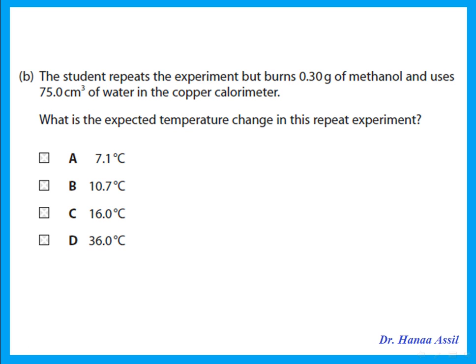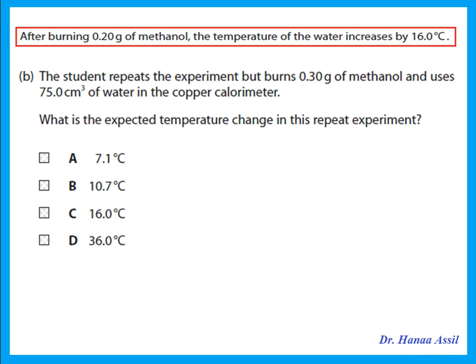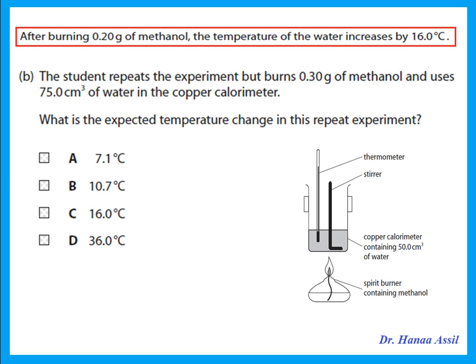The student repeats the experiment but burns 0.3 grams of methanol and uses 75 cm³ of water, instead of the original 0.2 grams and 50 cm³. What is the expected temperature change? The temperature should rise by the same amount since we're using the same substance — methanol. The delta T for methanol would be the same whether using 0.2 or 0.3 grams, since we are using more water. So it would be the same rise in temperature.